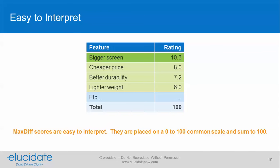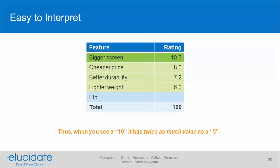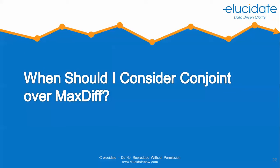Results are very easy to interpret. All the items get placed on a 0 to 100 common scale and they sum to 100. When you see a 10, it has twice as much value as a 5. This is ratio scale data, so those values show you that one item is twice as important or twice as preferred as another. You just can't say that with rating scale results.